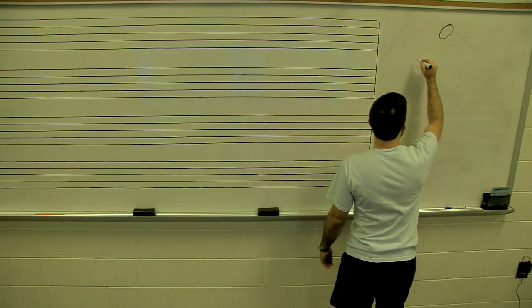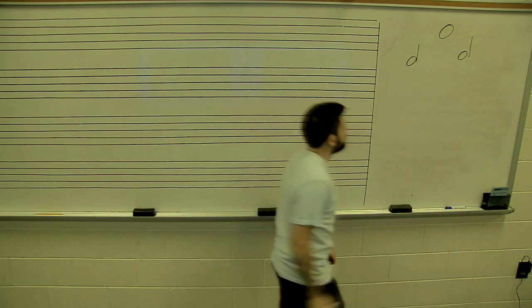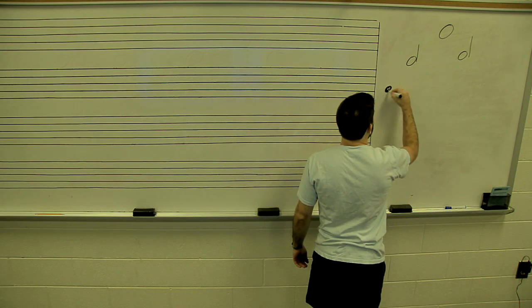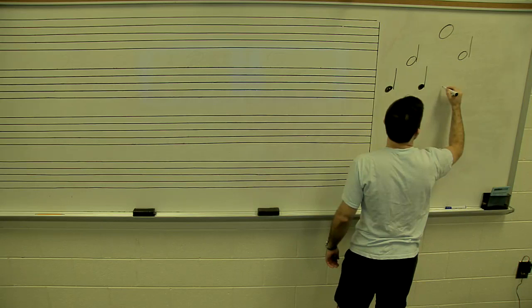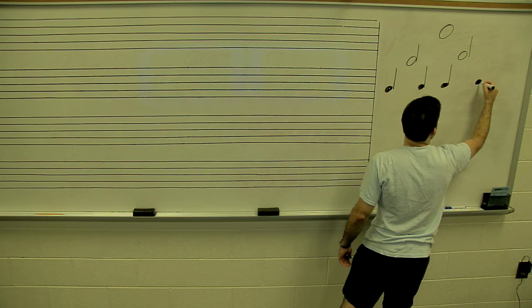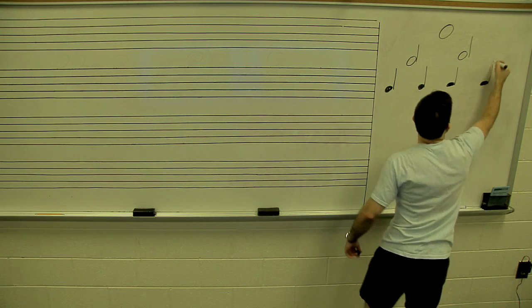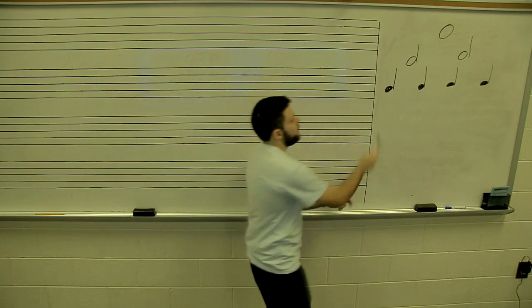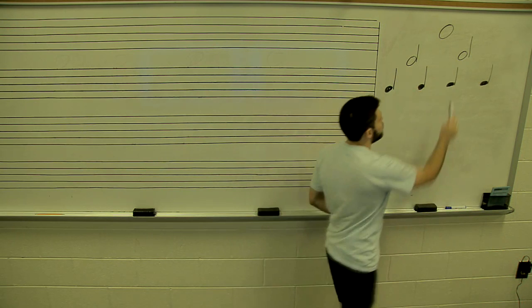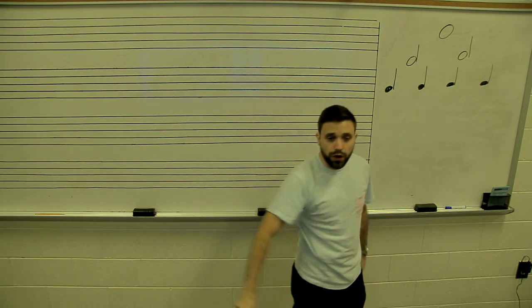There's one whole note at the top, then we divide that into two halves — there are two halves in one whole. Then we divide that into quarter notes. You can see it's a lot easier to read: two quarters in one half, four quarters in one whole note.